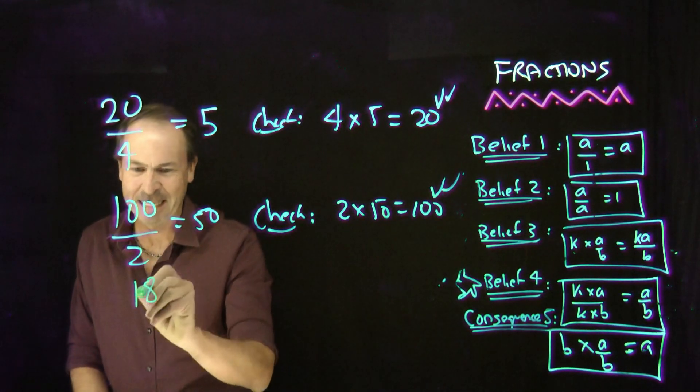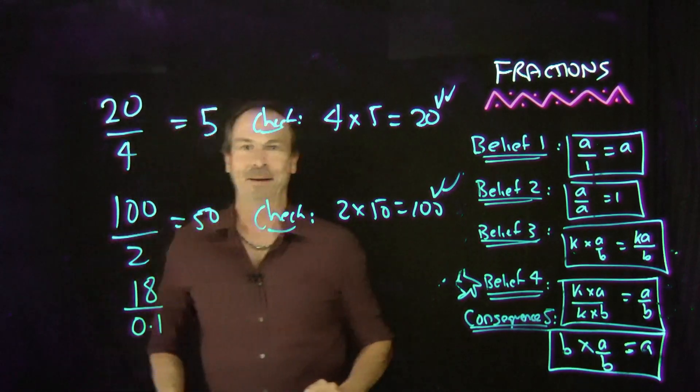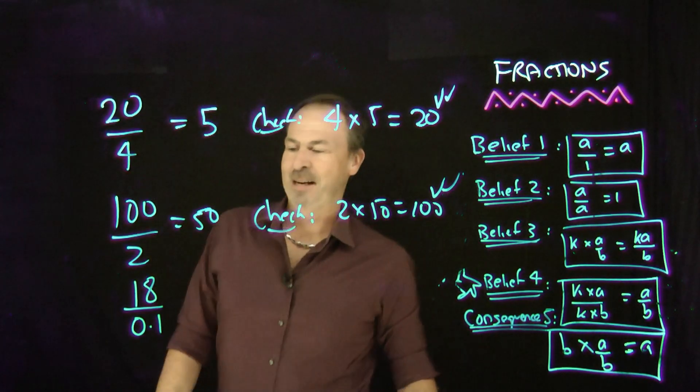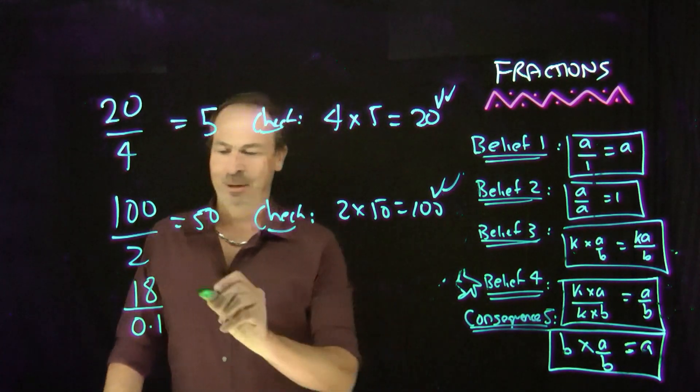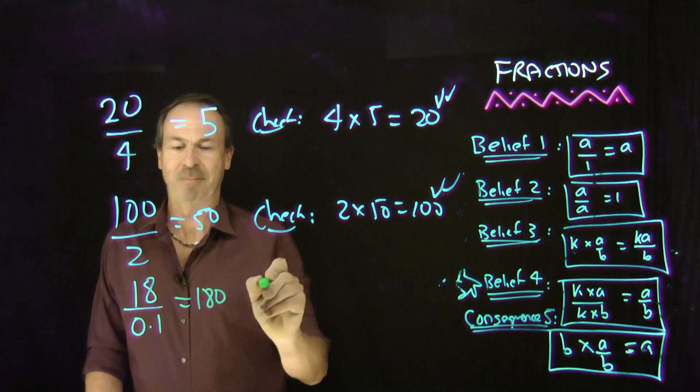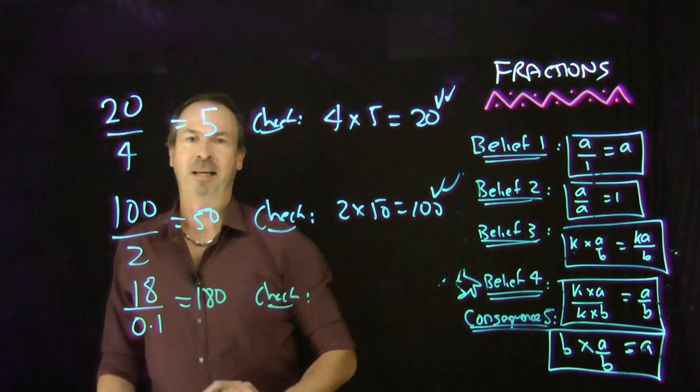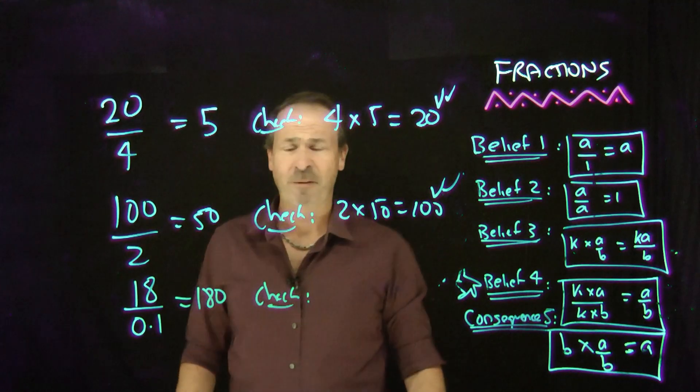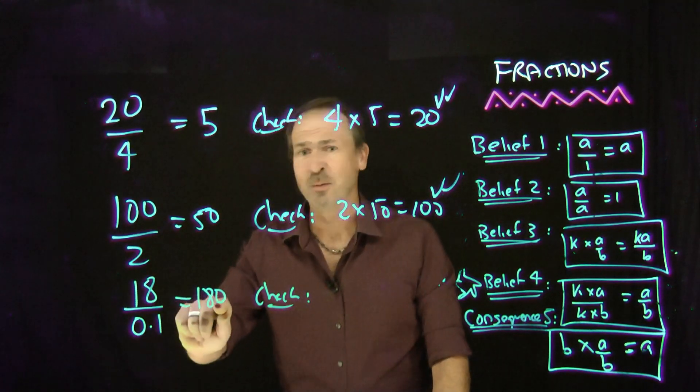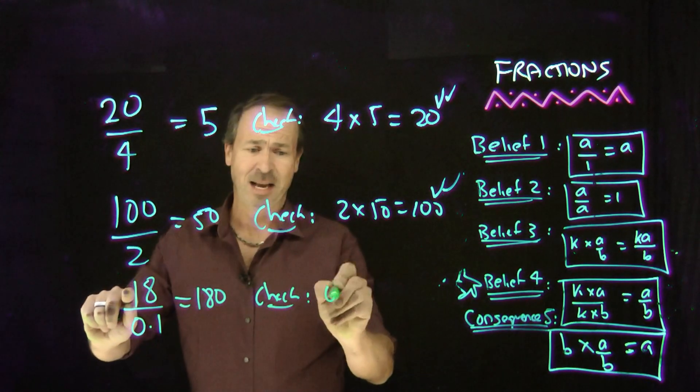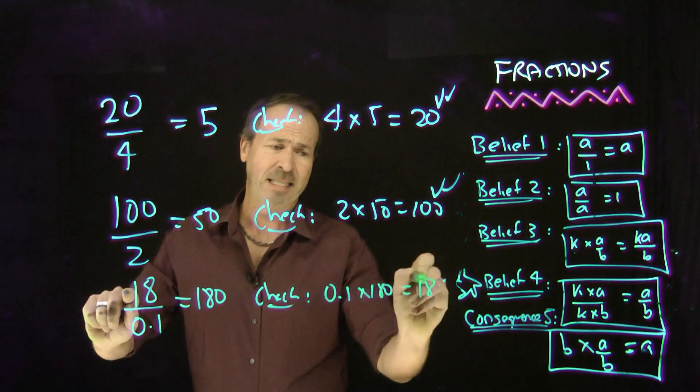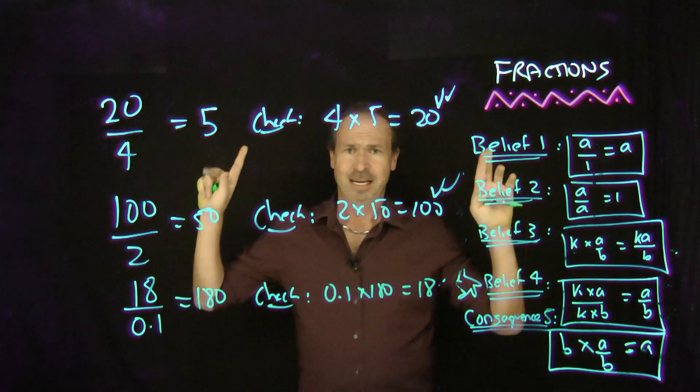Let me do a sort of a more complicated one. How about 18 divided by 0.1? I have a feeling it's probably going to be a big answer. I'm going to guess the answer is 180. Okay, let's see if I pass my little check. So according to consequence number 5, 0.1 times 180 should be 18. I need 0.1 times 180 to equal 18. I'm crossing my fingers. Is it?